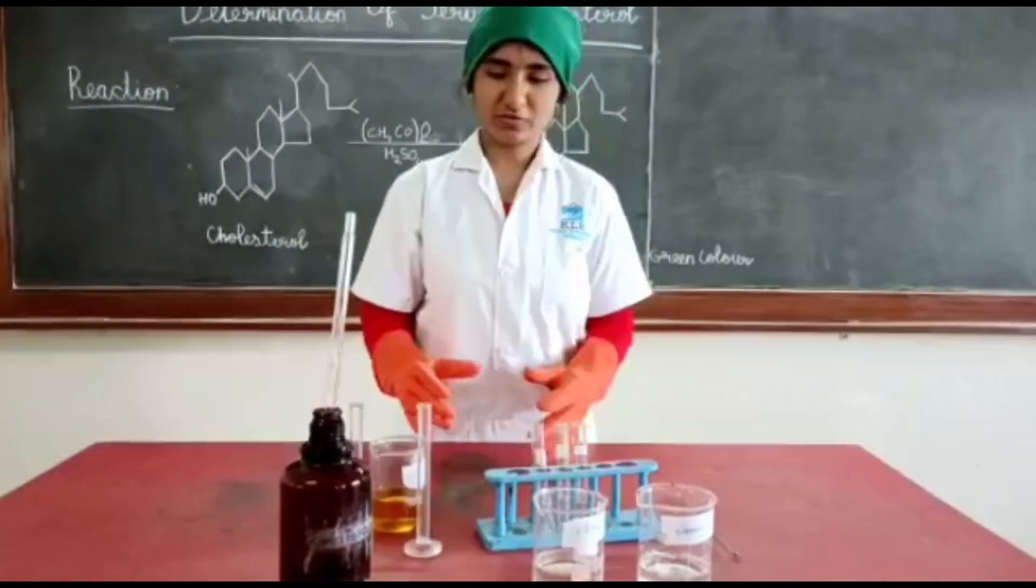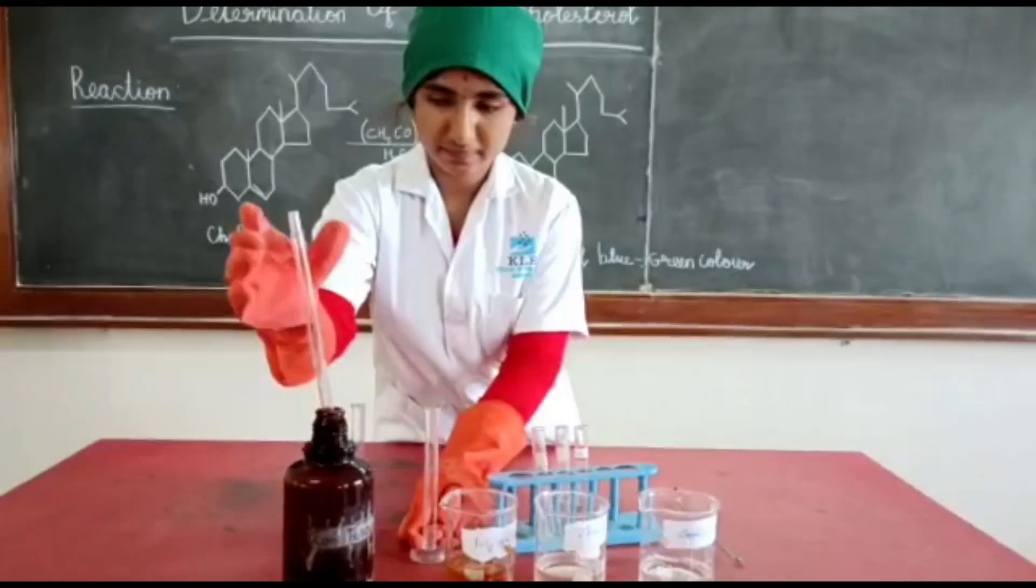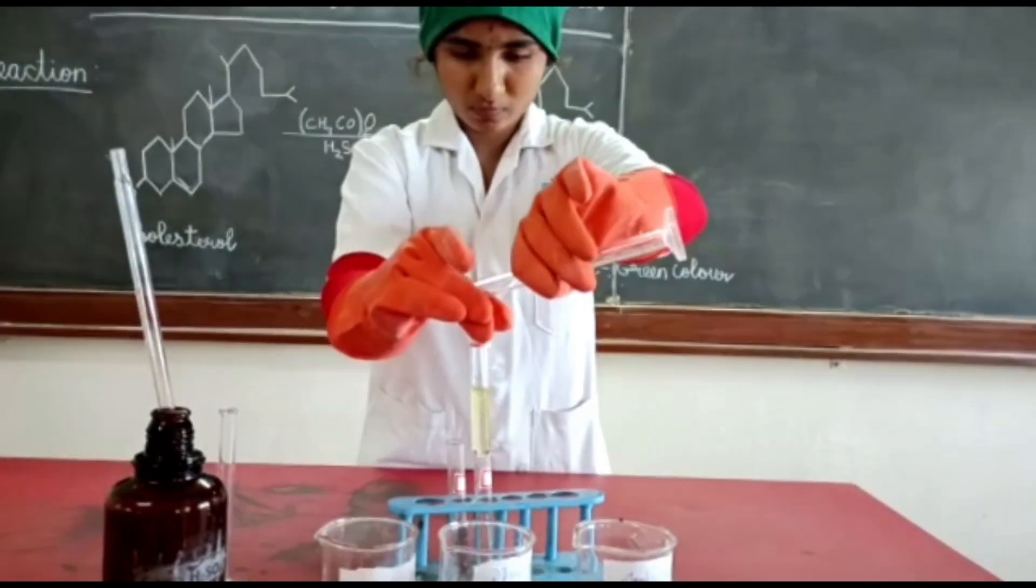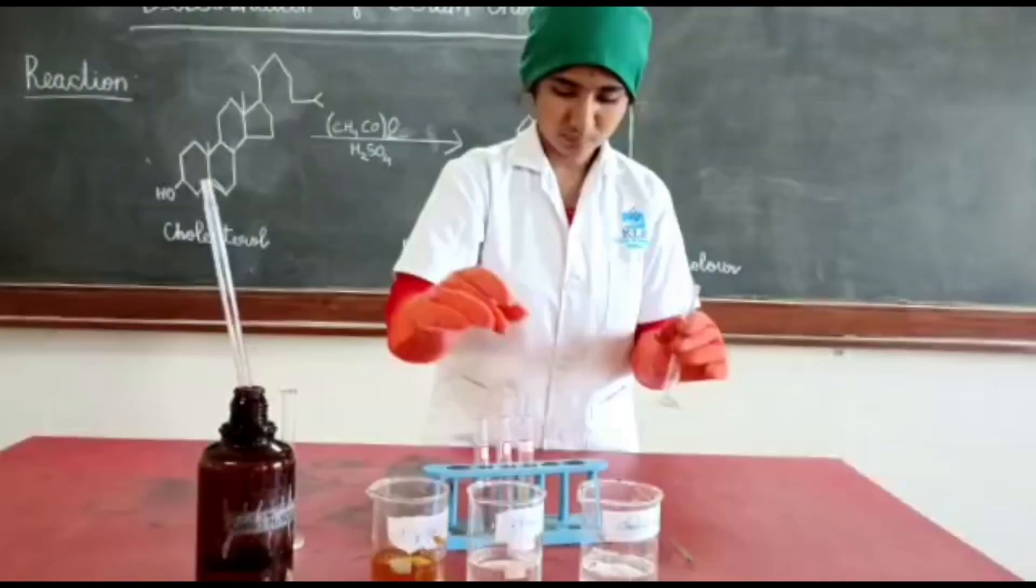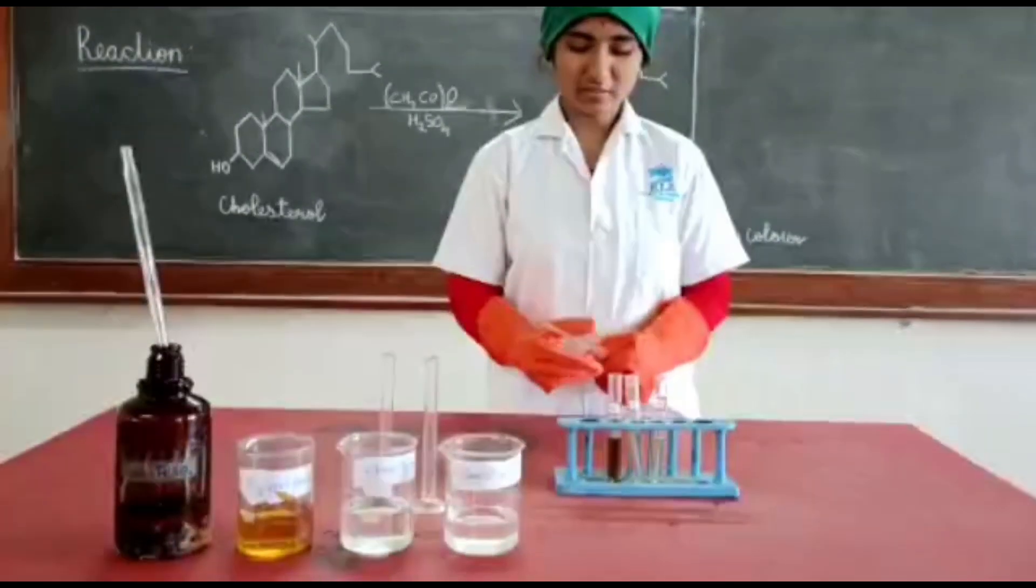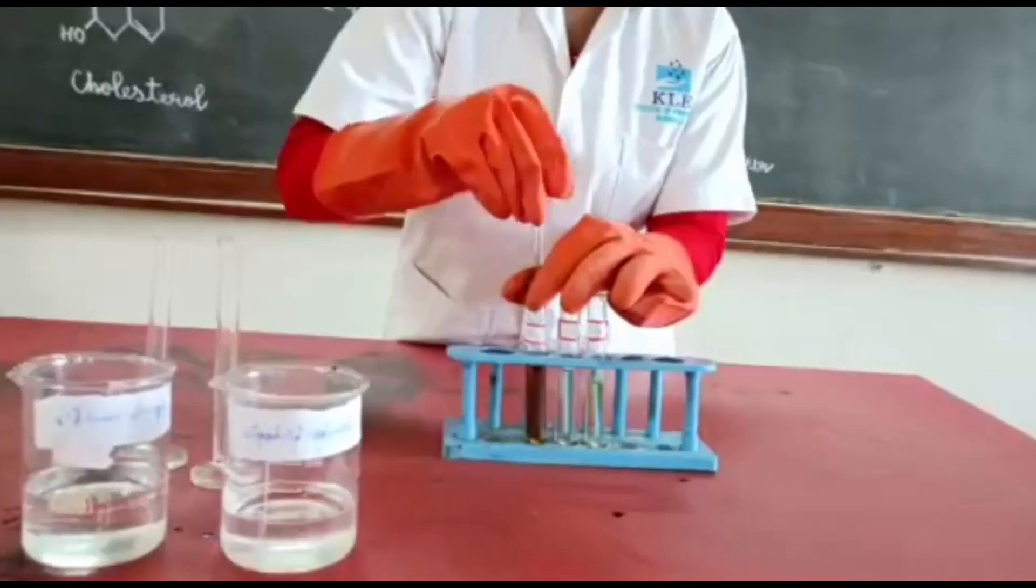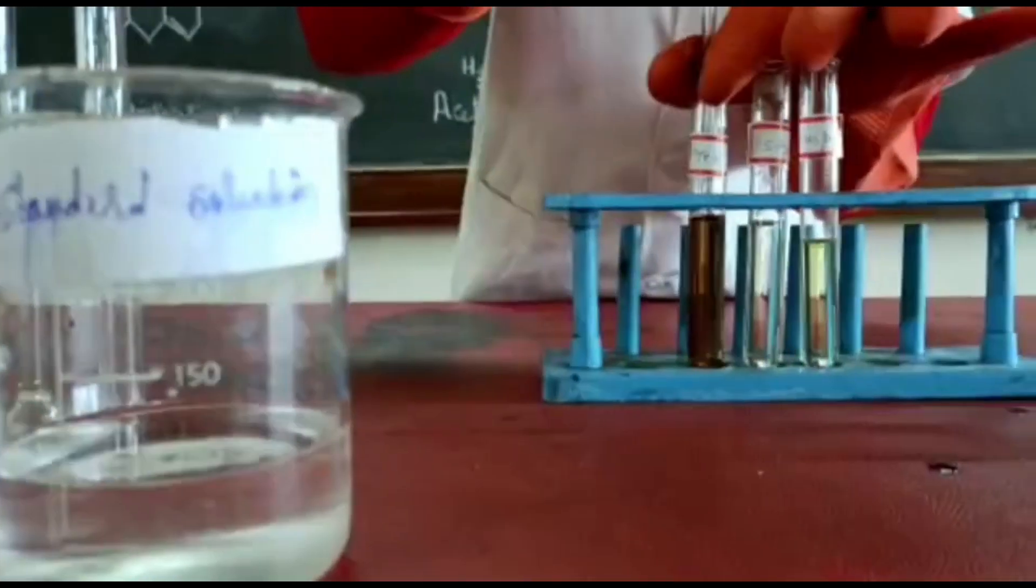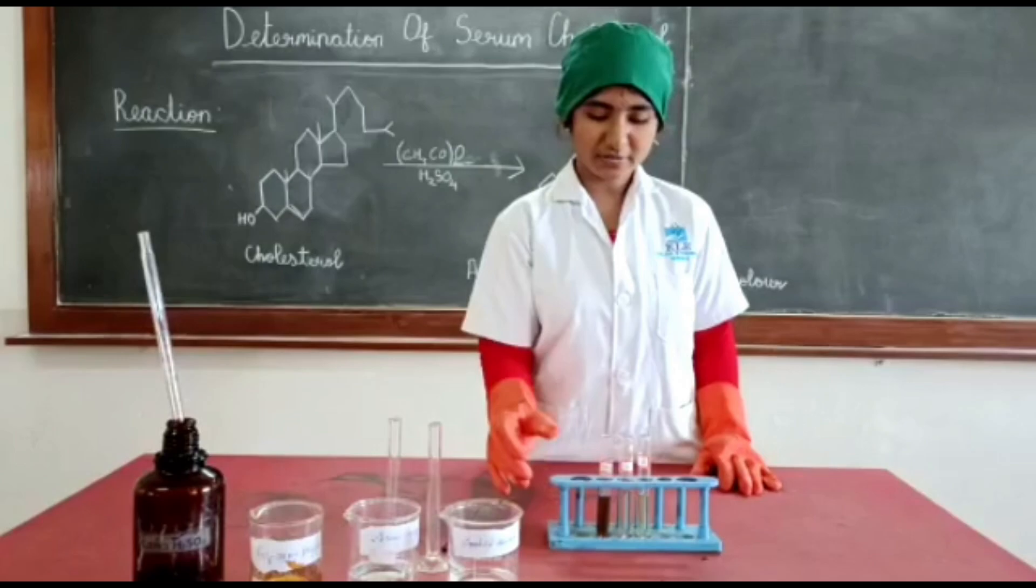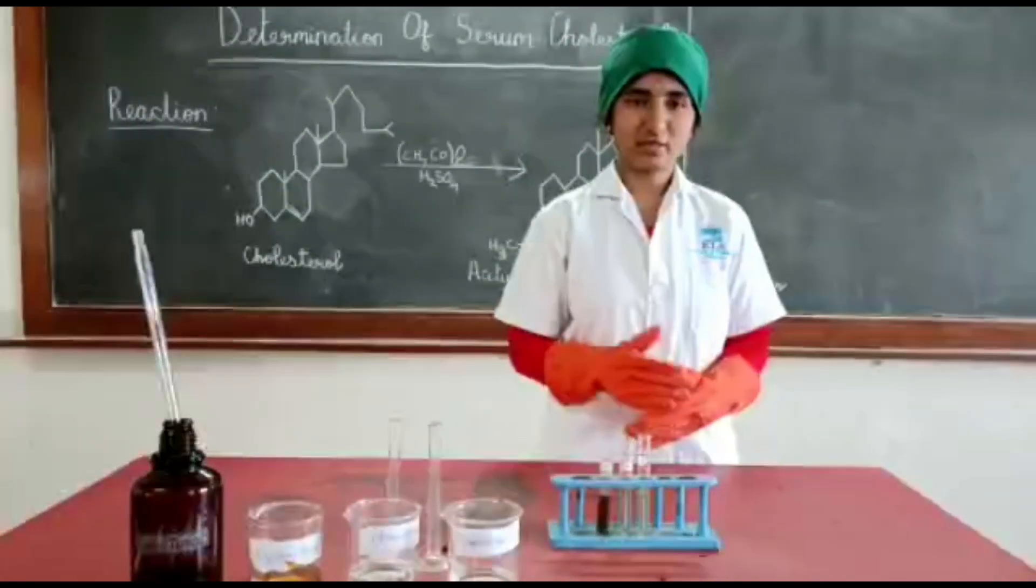In each test tube we should add 3 ml of concentrated sulfuric acid and stir with glass rod. After the stirring, keep it aside for 10 minutes to develop the color and read the optical density of test and standard solution at 560 nanometer against blank.